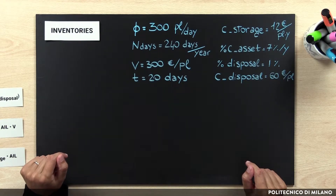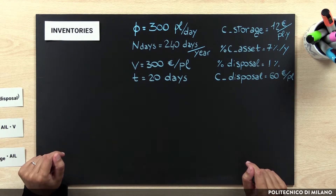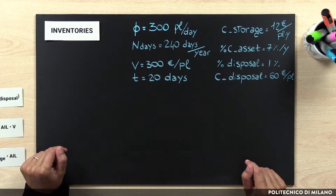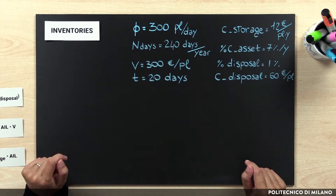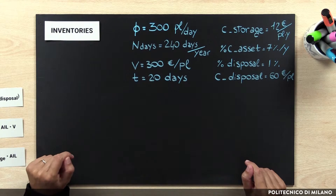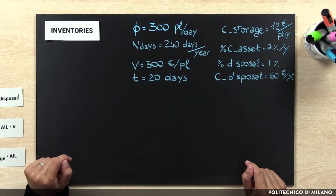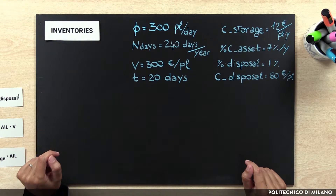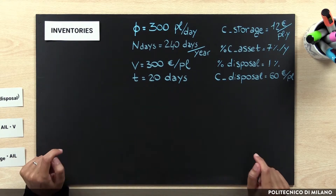We consider a warehouse with a flow of goods equal to 300 pallet loads per day, 240 working days per year, and the value of each pallet load is equal to 300 euros. The average time spent by the inventories in the warehouse is equal to 20 days.